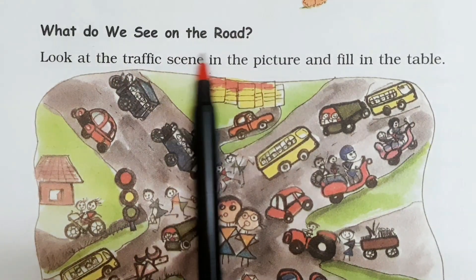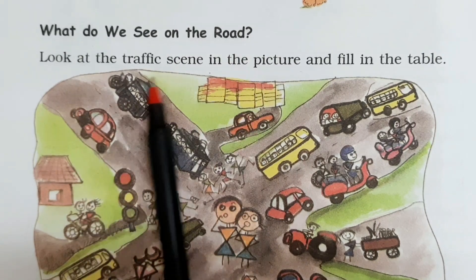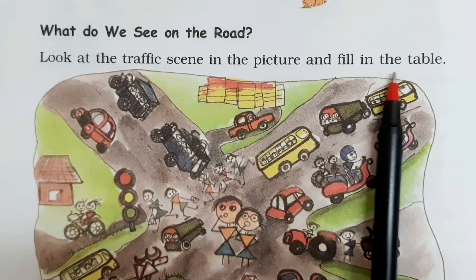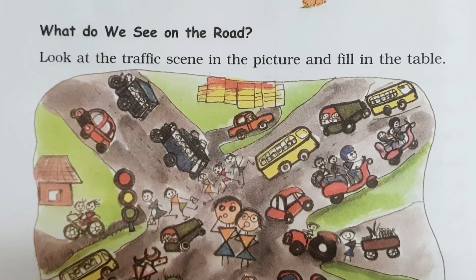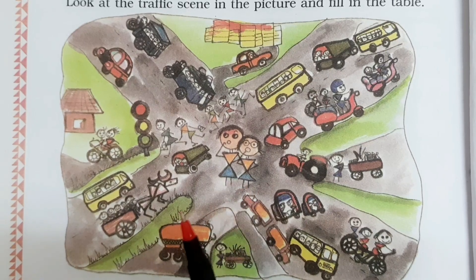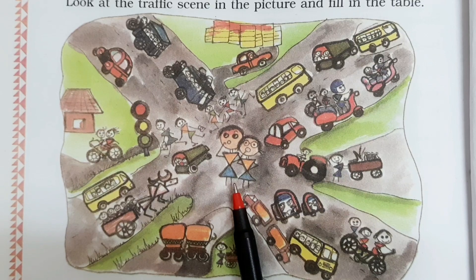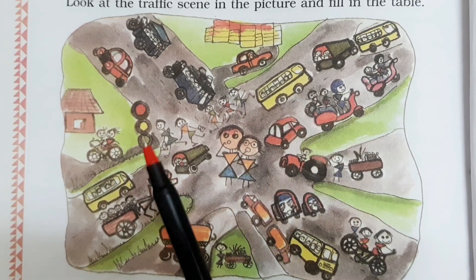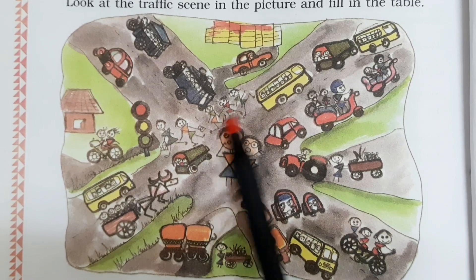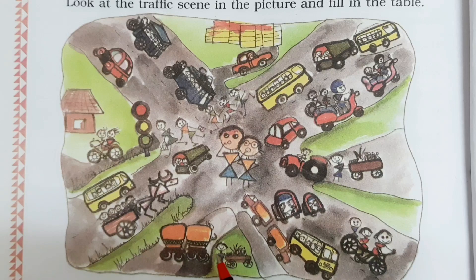What do we see on the road? Look at the traffic scene in the picture and fill in the table. What are you doing in the picture? There are some vehicles and walking people. 1, 2, 3, 4, 5, 6, 7, 8, 9. There are 9 vehicles.